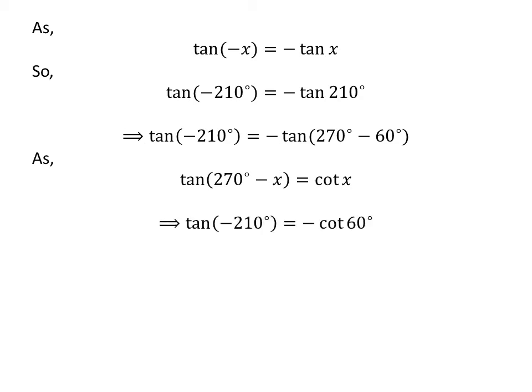Let us apply the above identity for tangent of 270 degrees minus 60 degrees. Here, x is 60 degrees. So tangent of minus 210 degrees is equal to minus cotangent of 60 degrees.